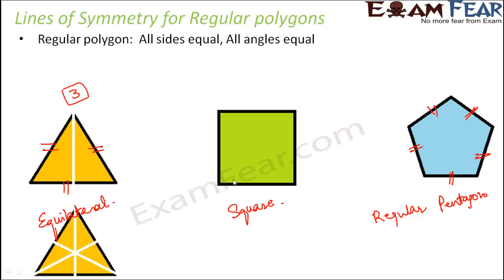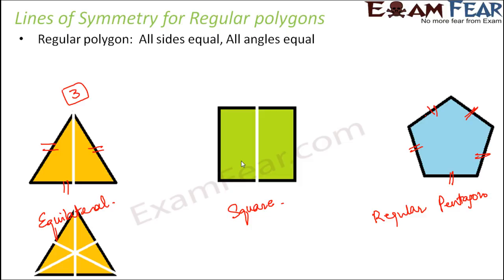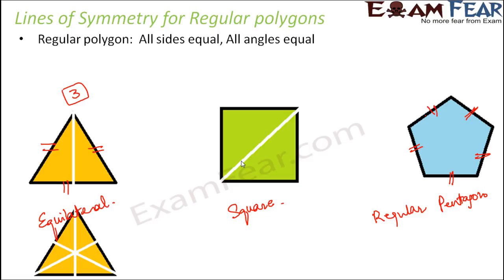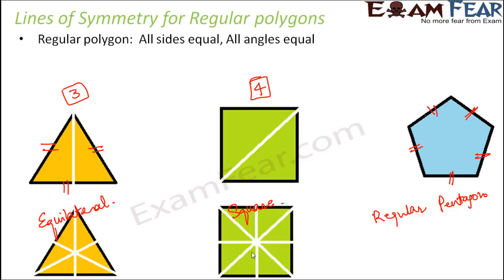Moving on to the square — in case of a square, you have a horizontal line of symmetry dividing it into two equal halves. You also have a vertical line of symmetry, which again divides it into two equal halves. And you have two diagonal lines of symmetry. So all in all, you have four lines of symmetry — one, two, three, and four. There are four lines of symmetry in case of a square.